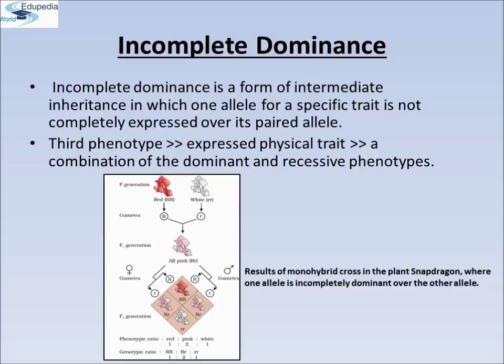Incomplete Dominance. When experiments on peas were repeated using other traits in other plants, it was found that sometimes the F1 had a phenotype that did not resemble either of the two parents, but was in between the two. Incomplete dominance is a form of intermediate inheritance in which one allele for a specific trait is not completely expressed over its paired allele, resulting in a third phenotype that is a combination of the dominant and recessive phenotype.